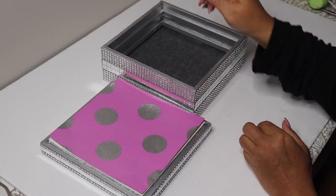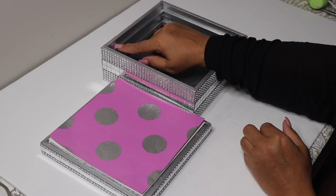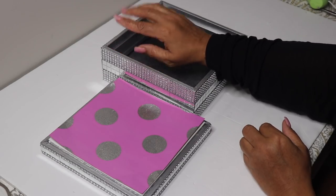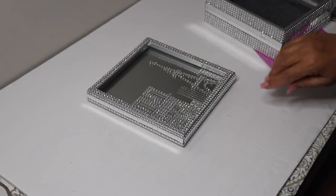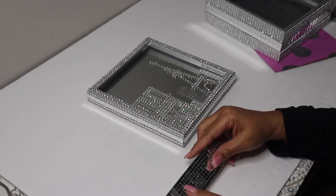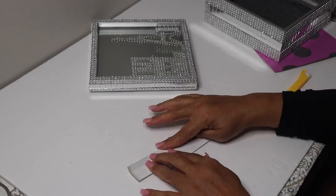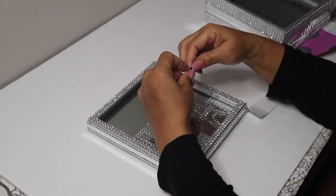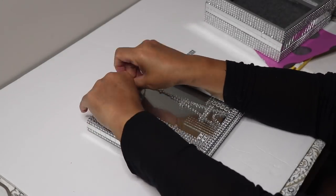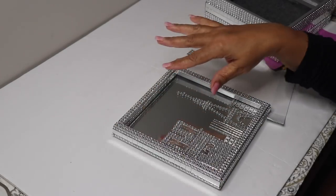You could also line the inside of the box with paper or foam board. Before finishing up my box, I decided to add some mirror tiles just inside the top of the lid. Repeat on the remaining three sides.